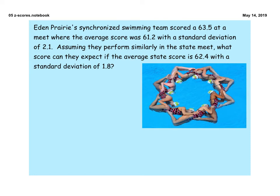Okay, so here's another problem. We have Eden Prairie's synchronized swim team scoring a 63.5 at a meet where the average was 61.2 and the standard deviation was 2.1. So let's go ahead and calculate the z-score.